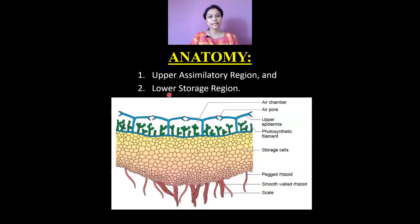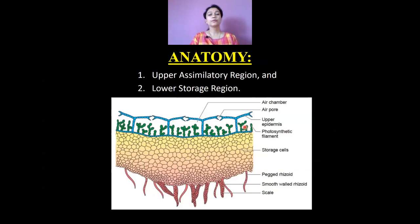Anatomically, this is the TS of the thallus of Marchantia. You can distinctly see here two different regions. The upper colored region is known as the assimilatory region, and the lower region, which is parenchymatous, is known as the storage region. The assimilatory region is made up of photosynthetic filaments, which may be branched or unbranched, and they are responsible for carrying on the process of photosynthesis within the plant body of Marchantia. That is why this region is known as the assimilatory region.